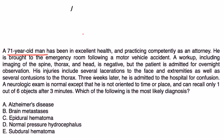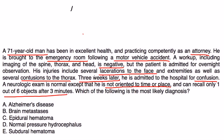Vignette 1: A 71-year-old man in excellent health who practices as an attorney is brought to the ER following a motor vehicle accident. Imaging of the spine, thorax, and head is negative, and he is admitted overnight. Three weeks later, he is admitted for confusion — he is not oriented to time or place and can only recall one out of six objects after three minutes. This is a classic presentation of subdural hematoma: an initial event, followed by neurologic deficit — decreased mental status — three weeks later.